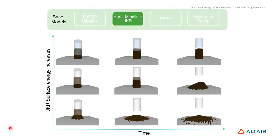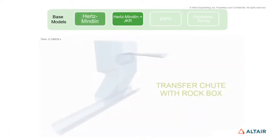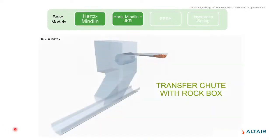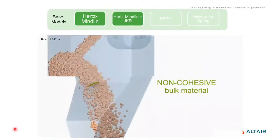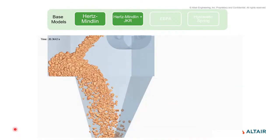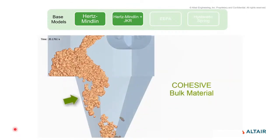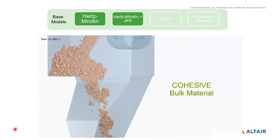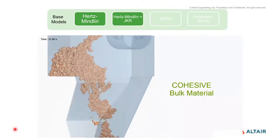JKR 모델에서 사용되는 서피스 에너지가 높은지 낮은지에 따라 최종적인 결과가 얼마나 다른지 확인할 수 있습니다. 지금 보시는 영상은 입자들이 슈팅되고 있을 때 응집력이 없는 Hertz-Mindlin으로 해석된 결과와 Cohesion Force가 있는 JKR 모델로 해석된 결과가 어떻게 다르게 나타나는지 보실 수 있는 영상입니다.